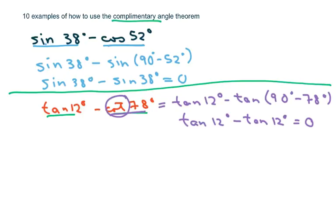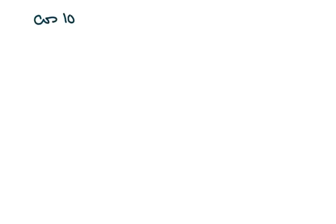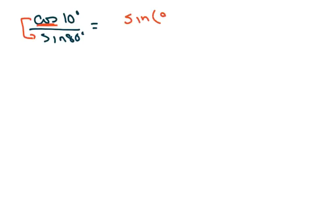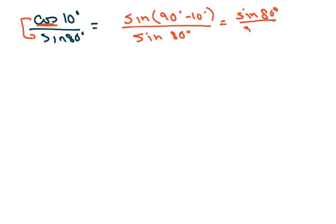Here's another one on a different slide. We have cosine of 10 degrees over sine of 80 degrees. I know that cosine and sine are co-functions. I'm going to go ahead and change the numerator to sine, so it's going to be sine of 90 minus 10 degrees, over sine of 80 degrees. So we get sine of 80 degrees divided by sine of 80 degrees, and that equals 1.